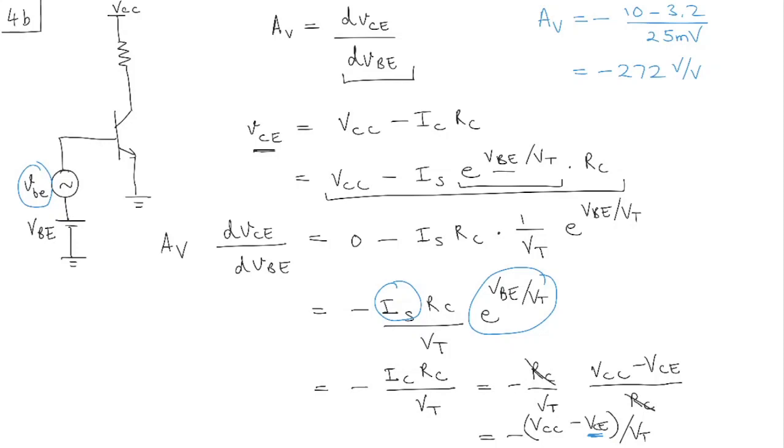Now, if the input amplitude is equal to, so the input signal is changing by around 5 millivolts. So the gain then, the output signal then, would change by 5 millivolts times 272. Or minus 272.